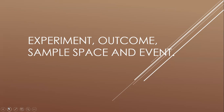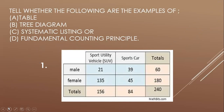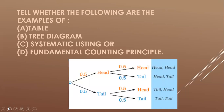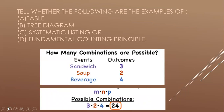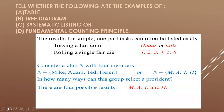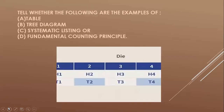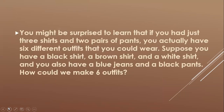Good day everyone. Our topic for today is about experiment outcome, sample space, and event. We have here examples — tell whether the following are examples of a table, tree diagram, systematic listing, or fundamental counting principle. This picture represents the table, and the next picture represents the tree diagram.